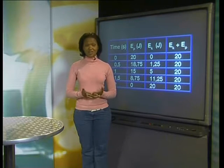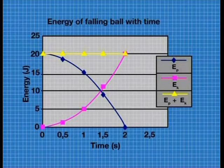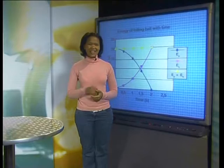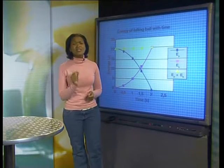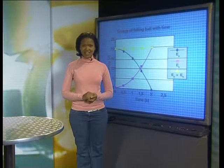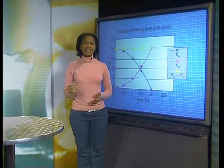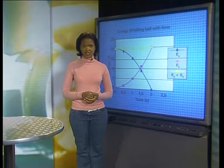We can show this on a graph too. The mechanical energy remains the same for the whole time the ball is falling. This illustrates one of the most important laws of physics: the law of conservation of energy. The law of conservation of energy states that the total amount of energy remains constant. We say energy cannot be created or destroyed, only transferred.